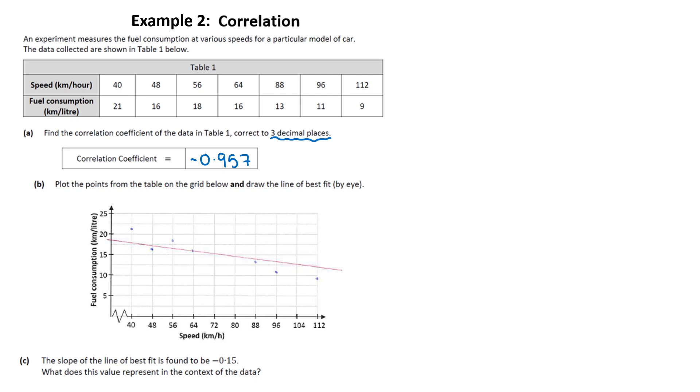So the slope of the line of best fit is found to be minus 0.15. What does that value mean in context? Well that's telling you how these two variables relate to each other. So as the speed increases by one kilometer per hour, the average fuel consumption decreases by 0.15 kilometers per liter.